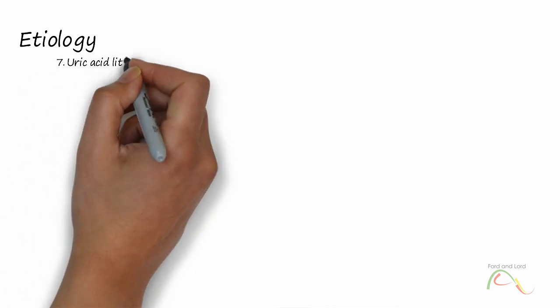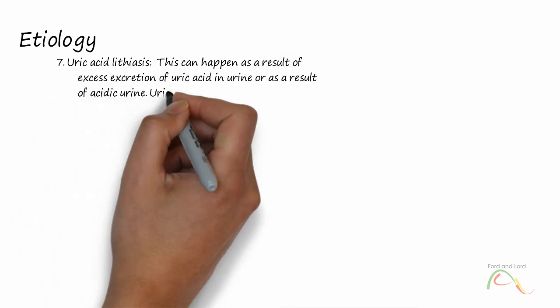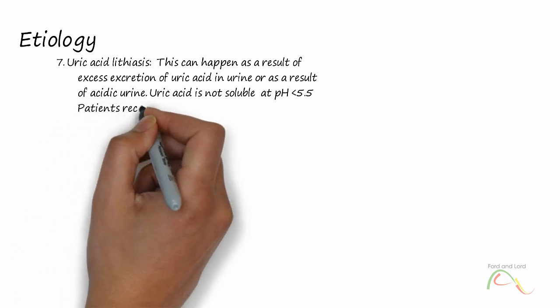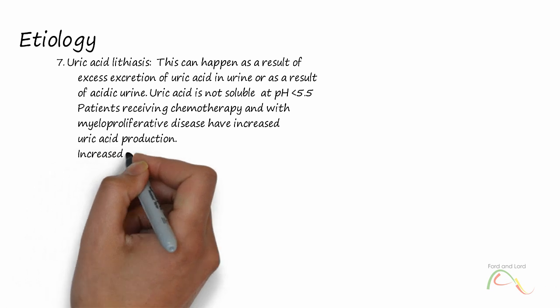Uric acid lithiasis: This can happen as a result of excess excretion of uric acid in urine or as a result of acidic urine. Uric acid is not soluble at pH less than 5.5.